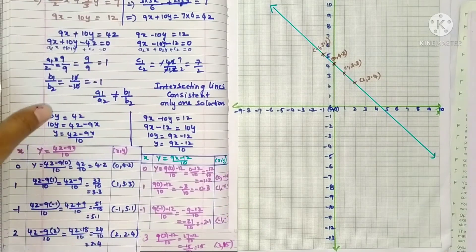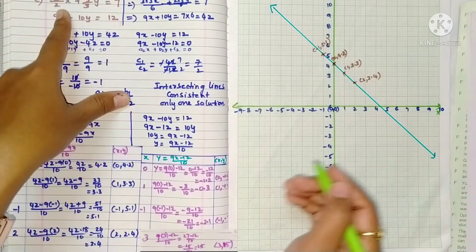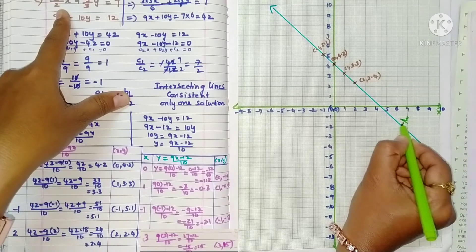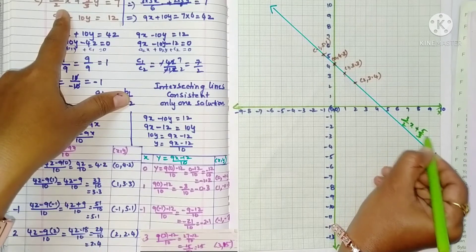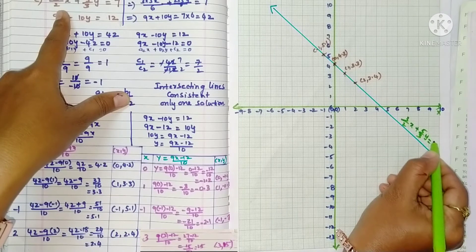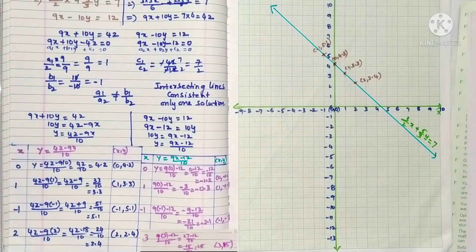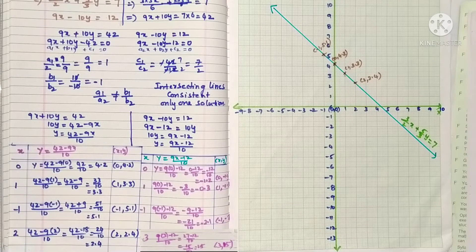Write the equation. What is the equation? First equation, 3 by 2 x plus 5 by 3 y equals 7. Next, second one.